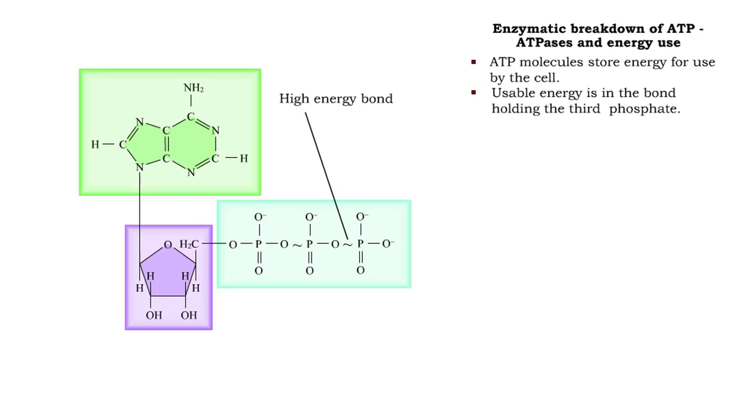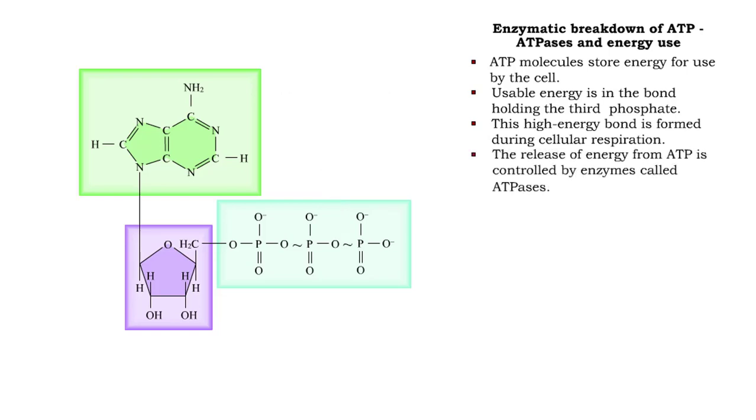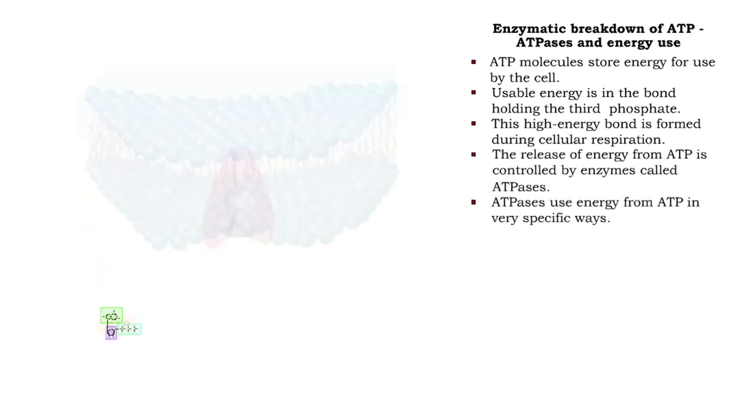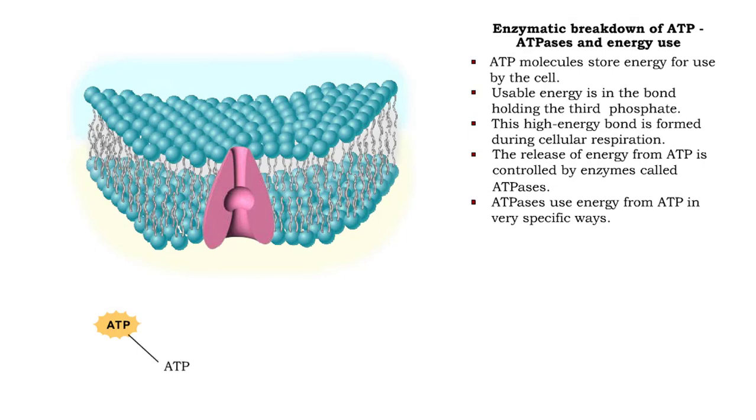This bond is formed during the processes of cellular respiration. The release of energy from ATP is controlled by enzymes called ATPases. ATPases use the energy from the breakdown of ATP in very specific ways.